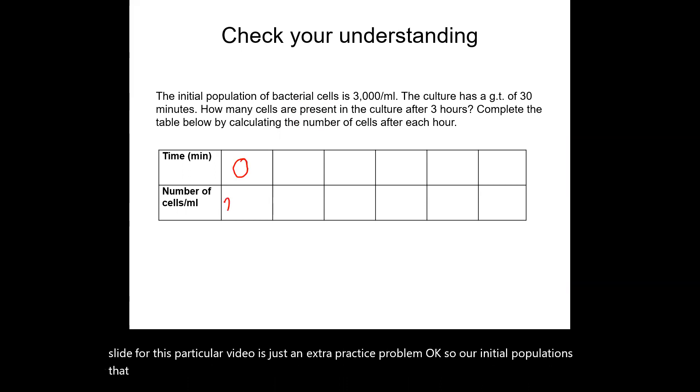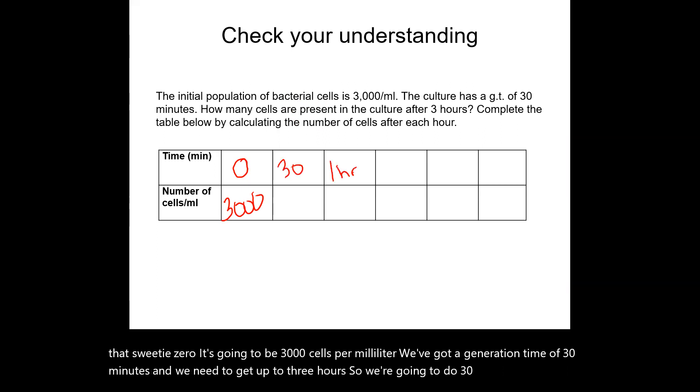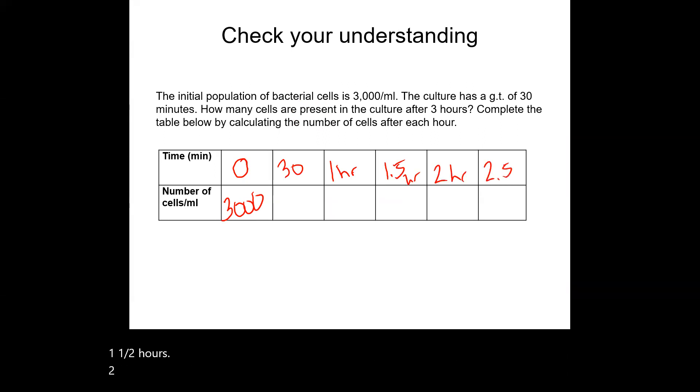So our initial population, so that's going to be T0, is going to be 3,000 cells per milliliter. We've got a generation time of 30 minutes, and we need to get up to three hours. So we're going to do 30 minutes, one hour, one and a half hours, two hours, two and a half, three hours. So then again, for every generation time, our population is going to double.